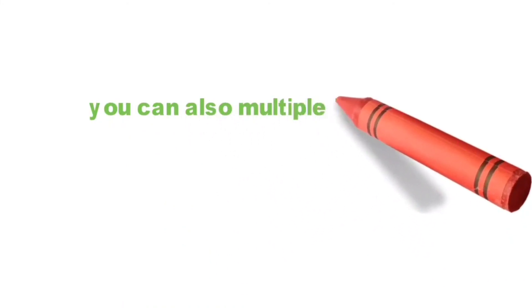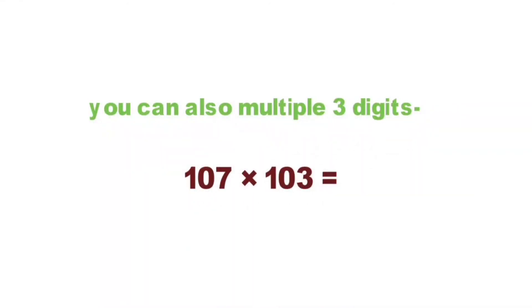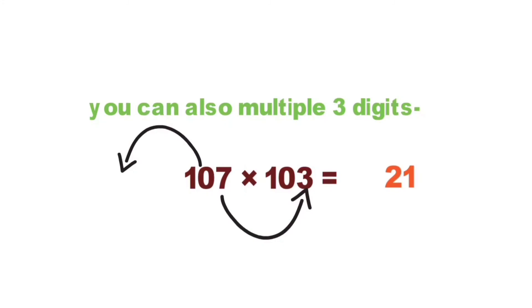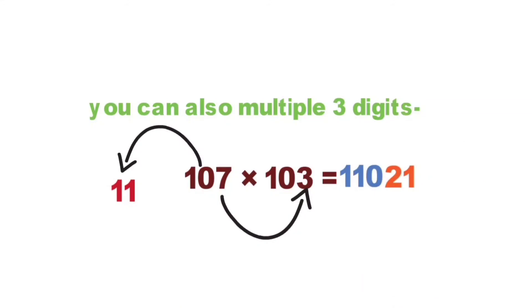By the way, you can also multiple three digits. Example: 3 times 7, this is 21. Now 10, next number is 11, so 11 times 10 equal to 110. So answer is 11021.